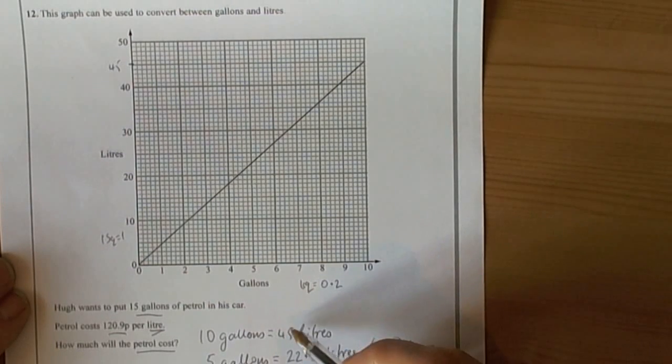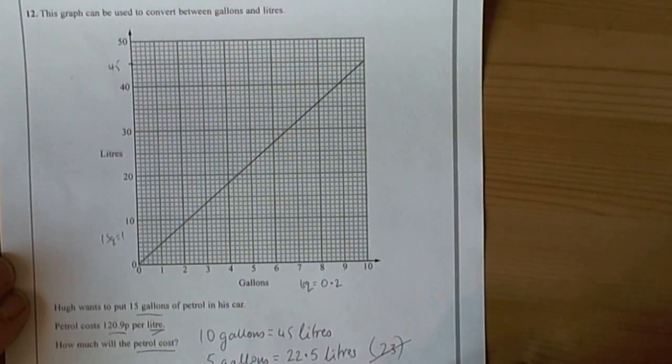So we would add those up to get the 15 gallons conversion, so we end up with 67.5 litres of fuel being used.